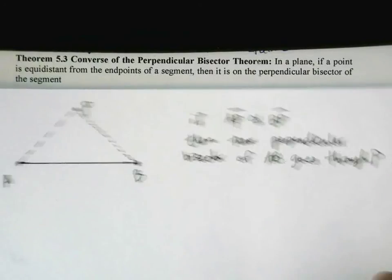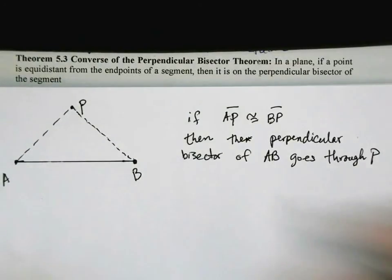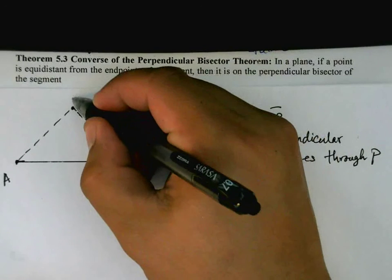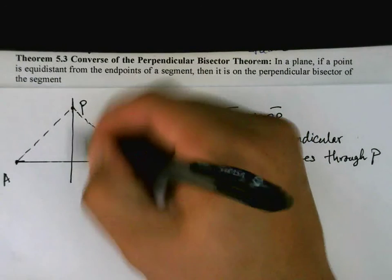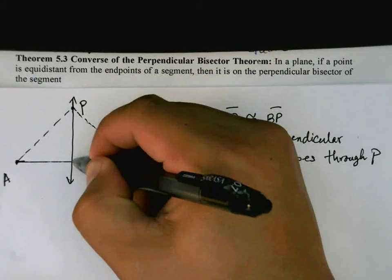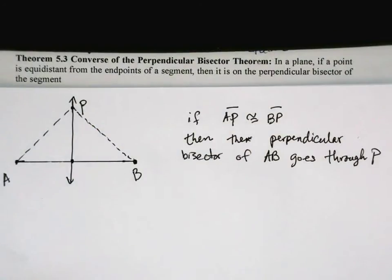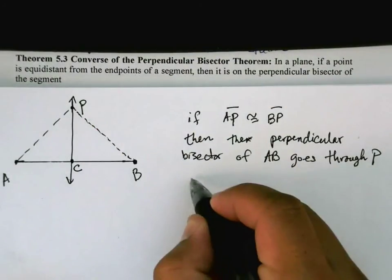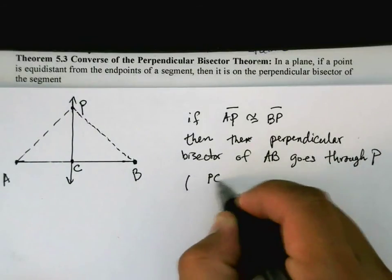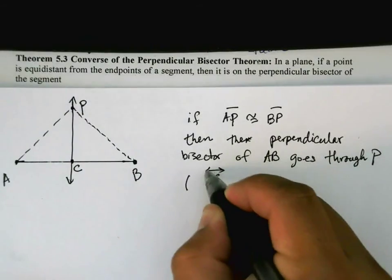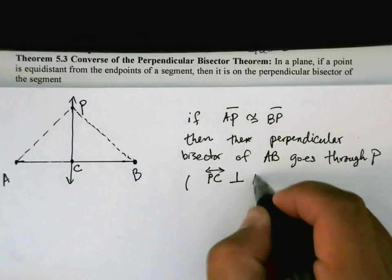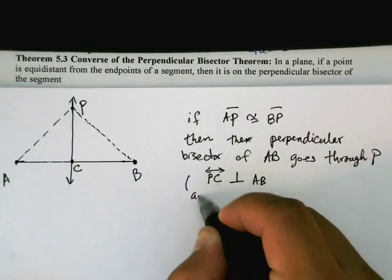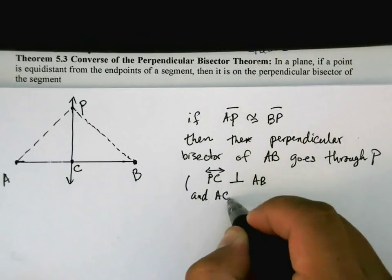In other words, then you must have some line here. So we'll call this point here C. And then what we're really saying is that PC, line PC, is perpendicular to AB, and AC is congruent to BC.